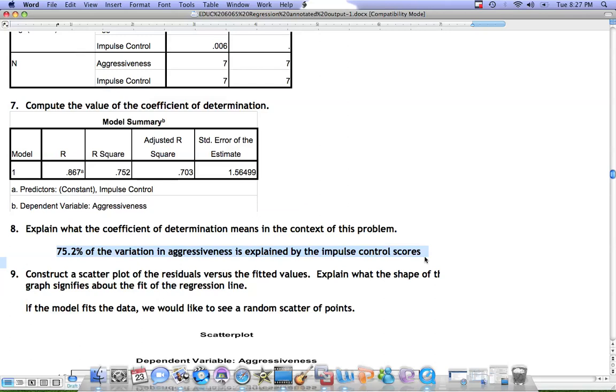is explained just by knowing the impulse control scores. Think about it this way. If we could explain 75% of the behavior in boys or girls or our child just by knowing a score on a test, wouldn't we be happy with that? This coefficient of determination indicates that we are working towards a high quality regression equation.